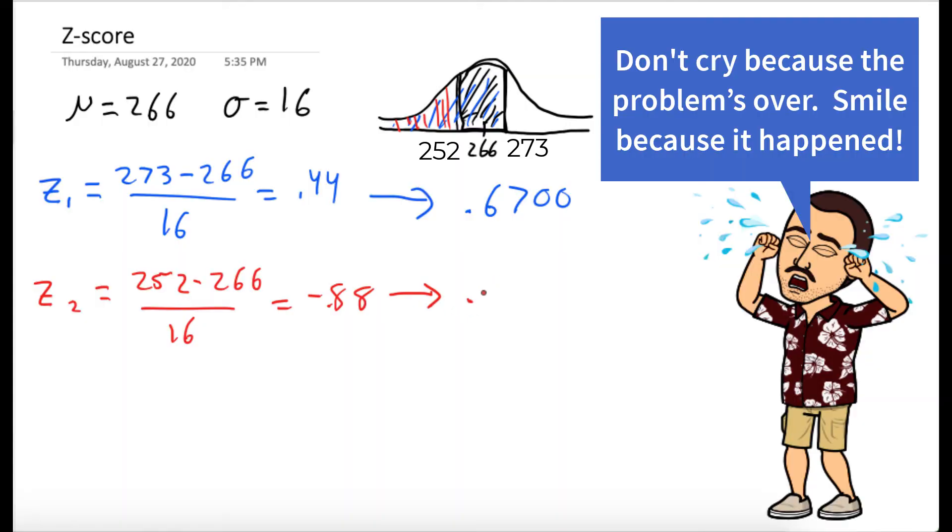And what we'll do is we'll take the difference of these two numbers and that will tell us the area that's shaded in black. So 0.6700 minus 0.1894 gives us our answer, which is 0.4806 or 48.06% of pregnancies are in that range.